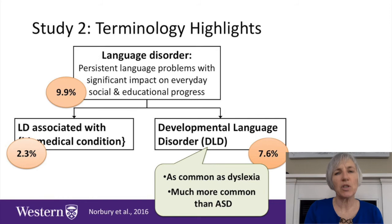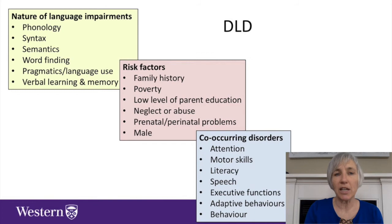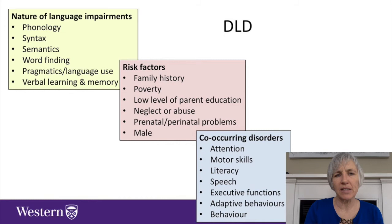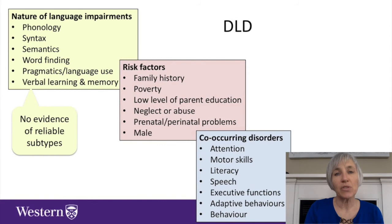As you can see, developmental language disorder is still fairly broad. So even when we use that term, we'll need to go on and describe the characteristics for that particular child in more detail. We'll need to describe the nature of the language impairments across domains, consider the risk factors associated with that child's language disorder, and also co-occurring disorders that might be associated with that child's particular profile. There's no suggestion of further breaking DLD down into specific subtypes regarding syntax or semantics, etc., because we don't really have evidence of reliable subtypes.